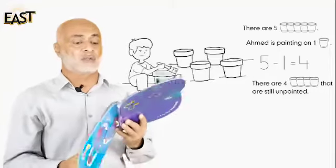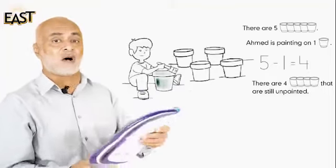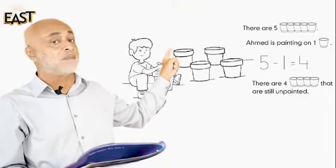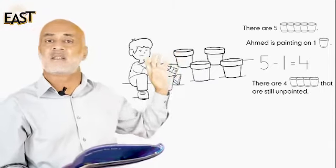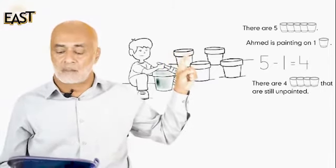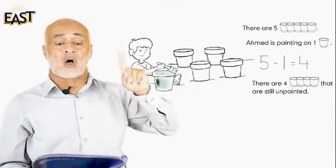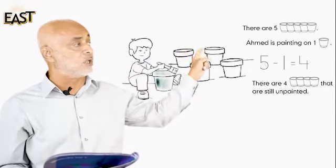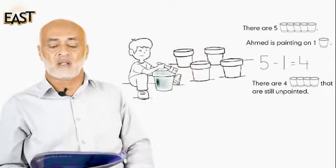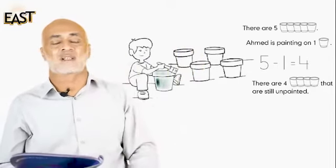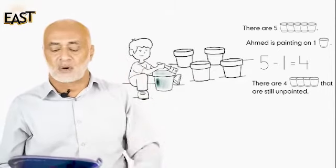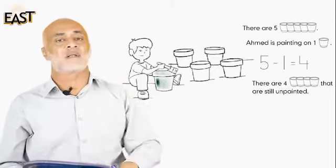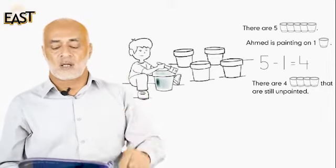Now let's do this page. What do we see here? Ahmad is painting some pots. Let's count — one, two, three, four, five. There are five pots. Ahmad is painting on one. So how many pots are left which are not painted?